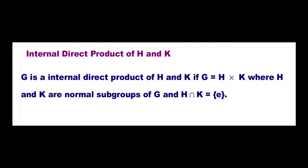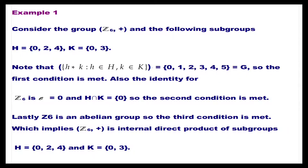Now let us define the internal direct product of H and K. G is an internal direct product of H and K if G = H × K, where H and K are normal subgroups of G and H ∩ K = {e}.